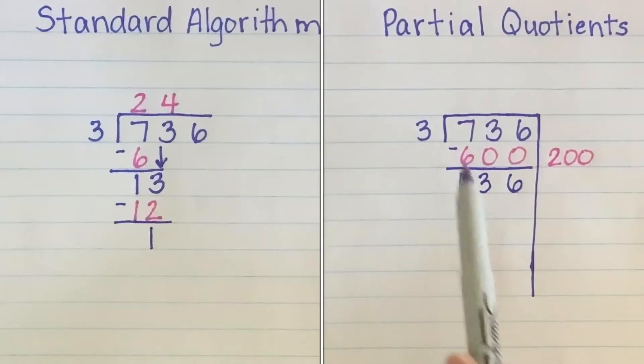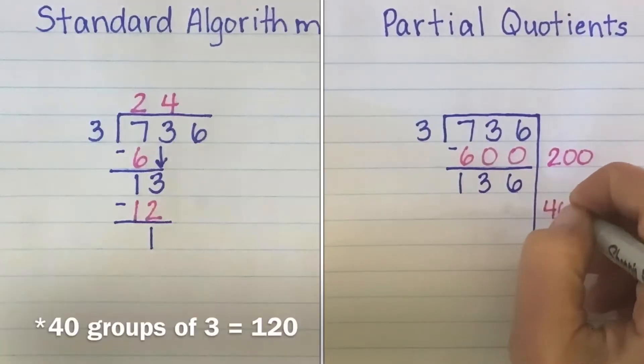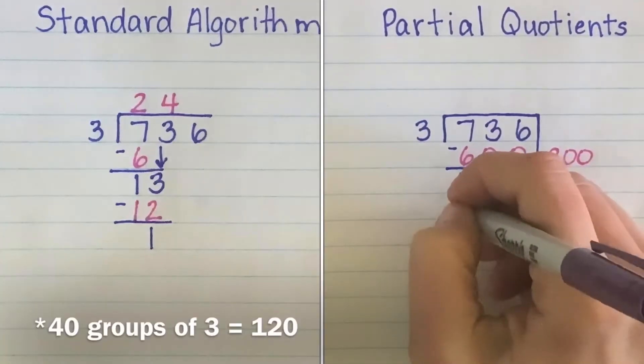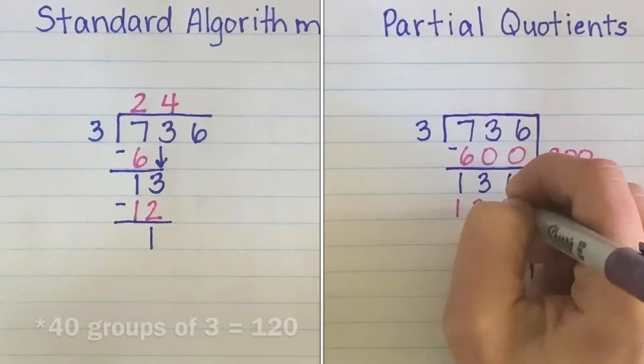Similarly, I know the largest group of 3 I can take from 136 is 40. 40 groups of 3 is 120, and 120 can be subtracted from 136 without going over.